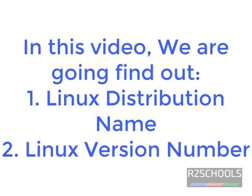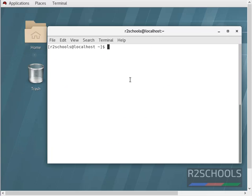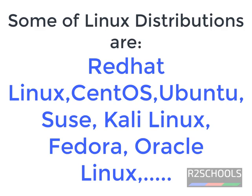In this video we are going to find out the Linux distribution name and its version. I have logged into my Linux server but I don't know which Linux distribution it is or its version. The major distributions include Red Hat Linux, CentOS, Fedora, openSUSE, Rocky Linux, and Ubuntu.